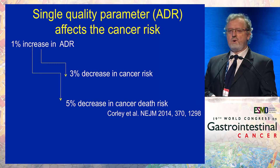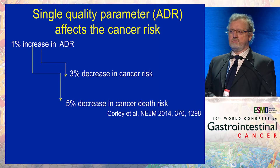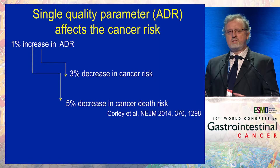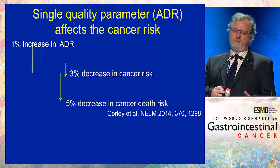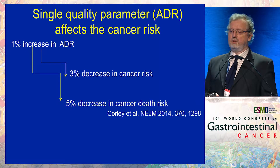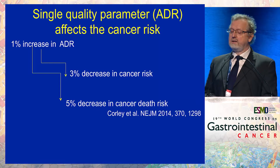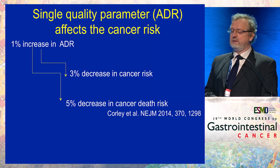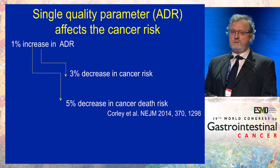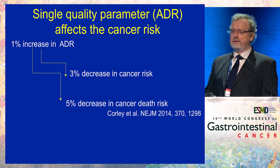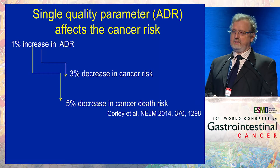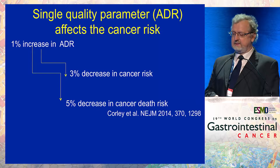If you have one percent higher adenoma detection rate — and the range we have among endoscopists now is between 15 to 40 to 45 percent, so there are different good, bad, and medium doctors — if you are one percent better, then your patients have a three percent decreased risk of colorectal cancer and five percent decreased risk of colorectal cancer death.